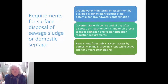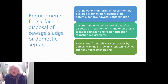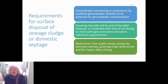For surface disposal, the primary requirement if you place sludge on land for disposal is to do groundwater monitoring, or to get an assessment by a qualified groundwater scientist that there's no potential for groundwater contamination. If it's several hundred feet to groundwater, there wouldn't be a concern. If it's five or ten feet, there would be a concern, and you'd need monitoring, or you'd need to avoid surface disposal or line the site.